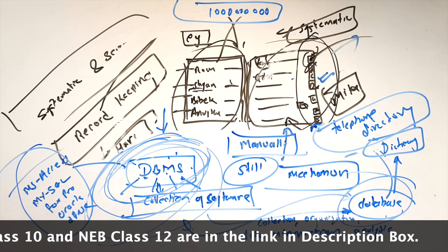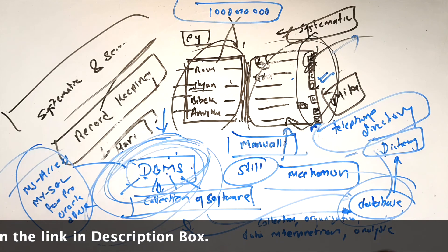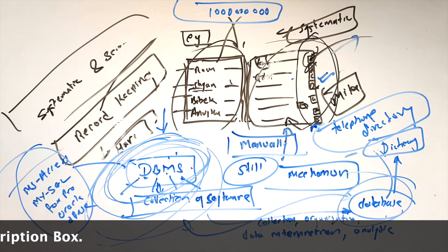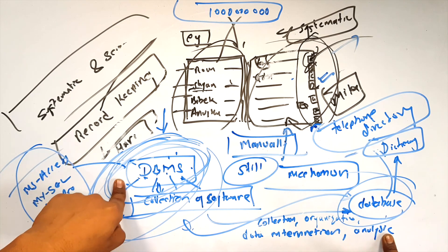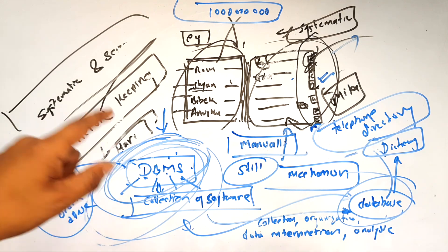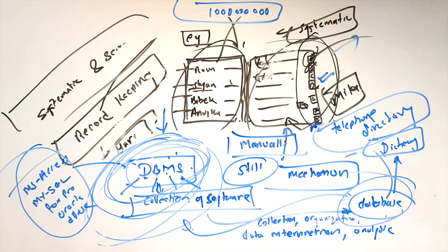Record keeping is very important, and DBMS is the best option for it. There are advantages and features of DBMS that we will cover in the next video. This was a lengthy introduction video. We covered the definition of database, the definition of DBMS, and examples. See you in the next video.